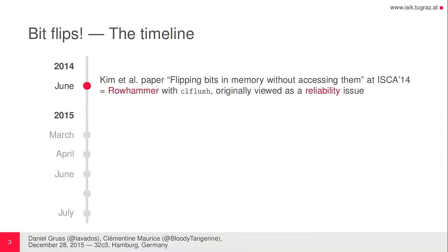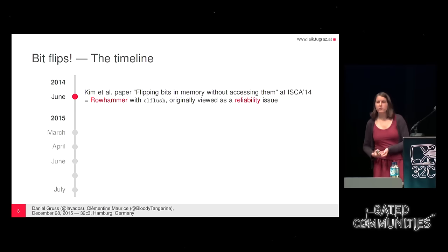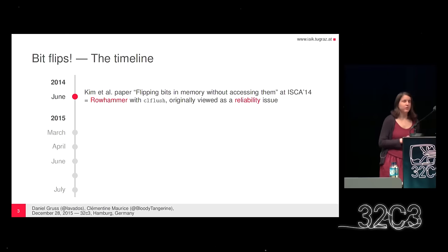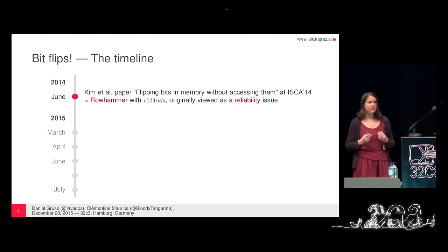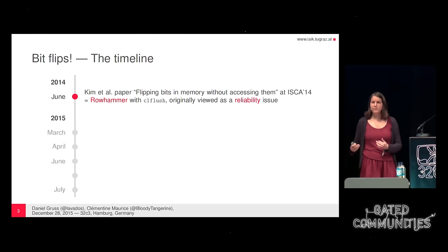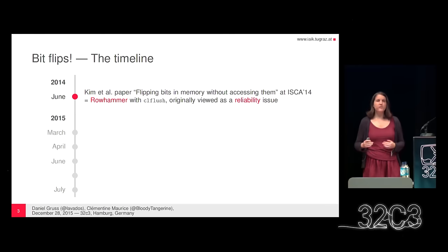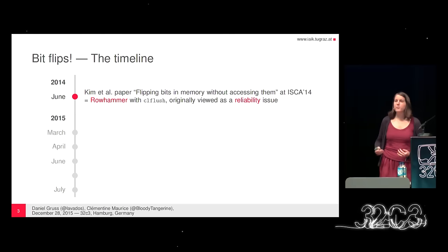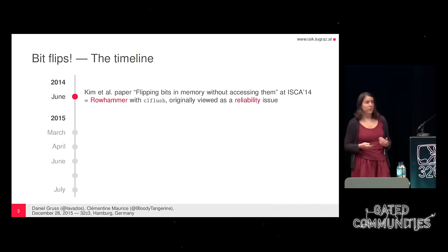A few words about the timeline. This is a story about bit flips in DRAM. It all started last year with the Kim et al. paper called 'Flipping Bits in Memory Without Accessing Them' at the ISCA conference. This is the original Rowhammer attack with the CLflush instruction. It was originally viewed as a reliability issue, and the security community started to say it might not be such a good idea to flip bits without accessing them. But some people said it's just a few bit flips and we can't really control them, so what could possibly go wrong?